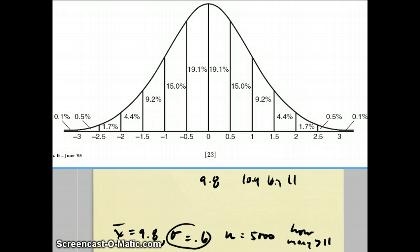In between here, I could write 10.7. Anyway, they wanted to know how many are more than 11, so I have an 11 here. Add up 1.7 and 0.5 and 0.1 to get 2.3%. Multiply 0.023 times 5,000 and you will get 115, which is the answer to that question.